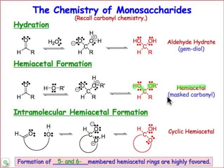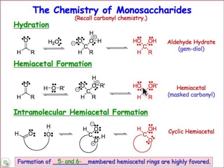You'll recognize the hemiacetal throughout the chemistry of carbohydrates because it's very important. You'll want to get used to spotting it and recognize that it's really a masked form of the carbonyl. Anytime you see a carbon atom that has two oxygens attached to it, that's going to be, formally, a carbonyl group found in its hemiacetal form.